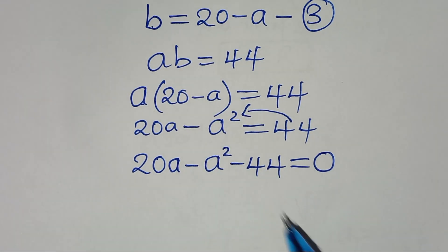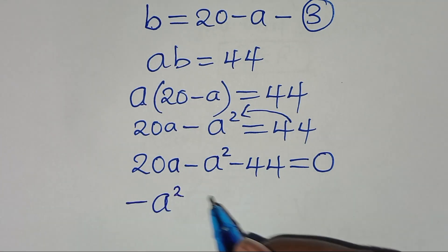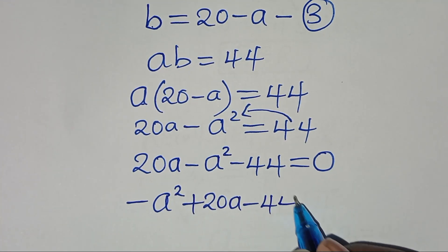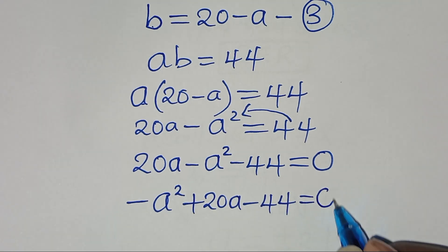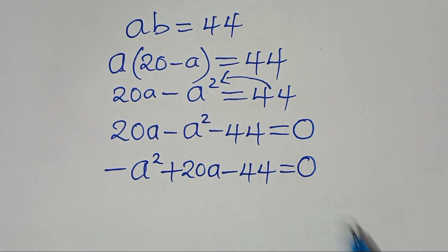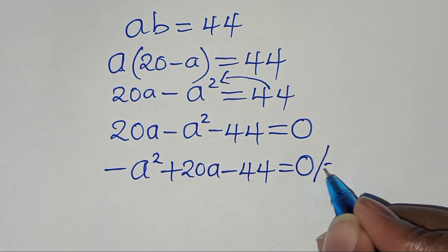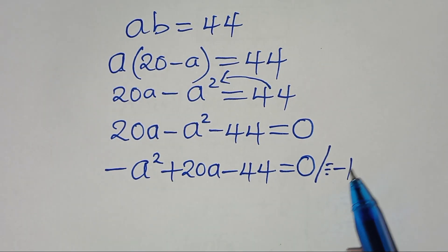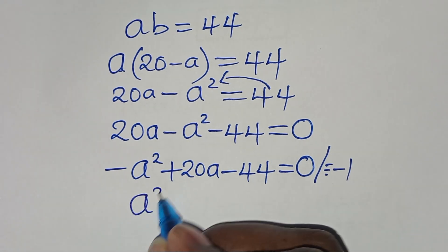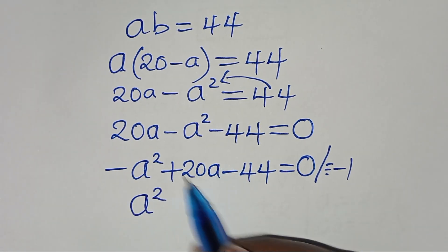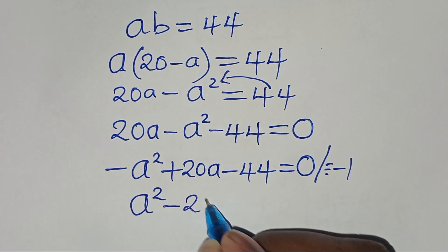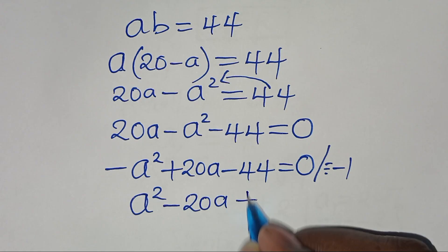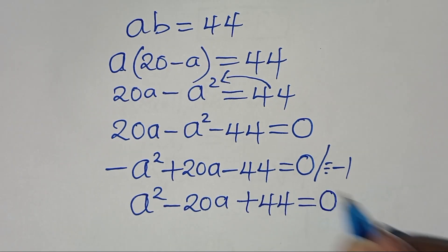Let's rearrange this equation so that we have minus A squared plus 20A minus 44 equals 0. The next step is to divide both sides by negative 1, so that now we have A squared minus 20A plus 44 equals 0.